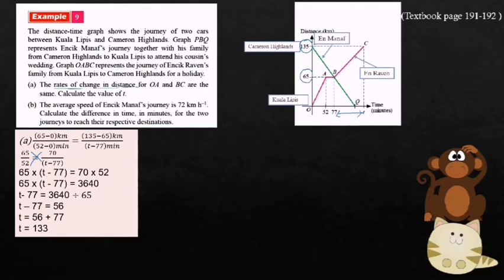Part B: The average speed of Encik Manaf's journey is 72 km per hour. Calculate the difference in time in minutes for the two journeys to reach their respective destinations.